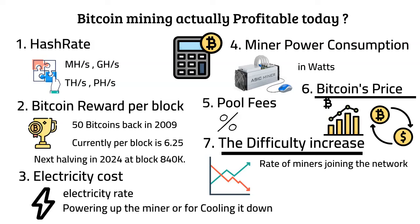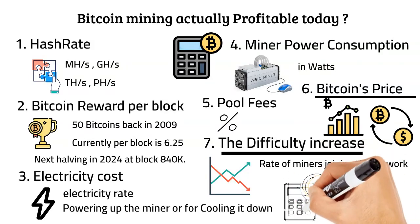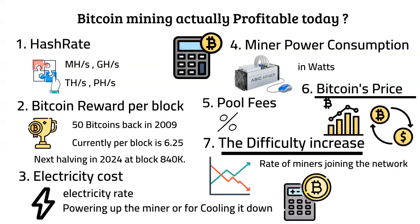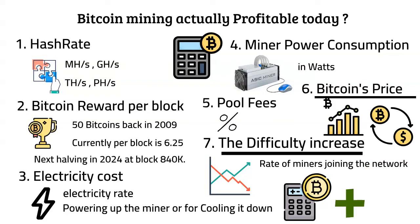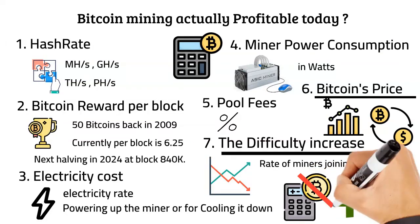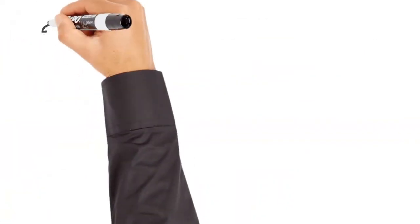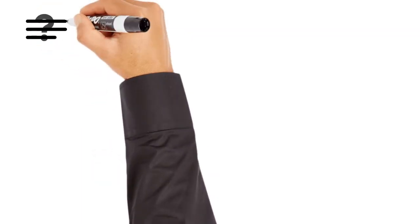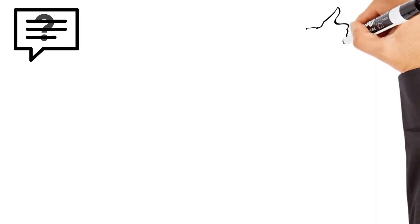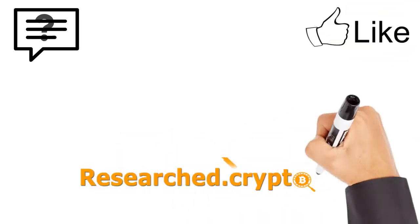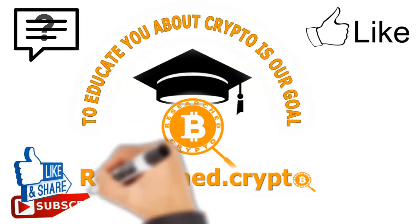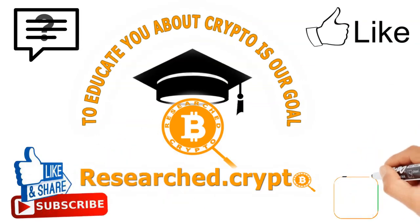Once you have all of these variables at hand, you can insert them into a bitcoin mining calculator and get an estimate of how much bitcoin you will earn each month. If you can't get positive results on the calculator, it probably means you don't have the right conditions for mining to be profitable. You may still have some questions — if so, just leave them in the comment section below. If you enjoyed what you've seen, don't forget to hit the like button, make sure to subscribe to Richard.crypto, and I will see you in the next amazing video.